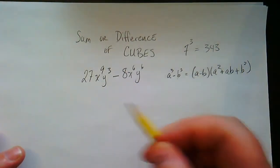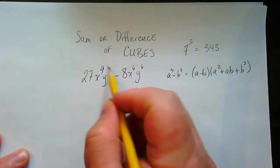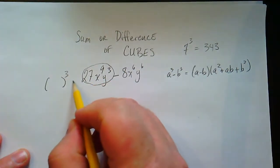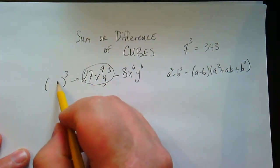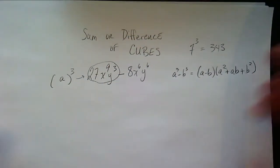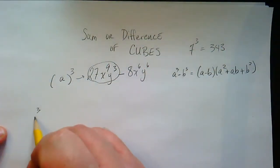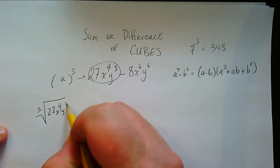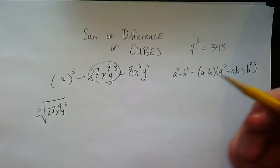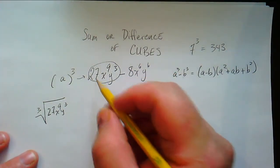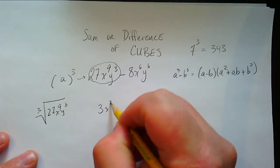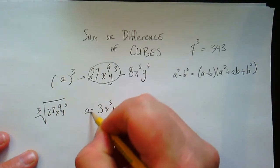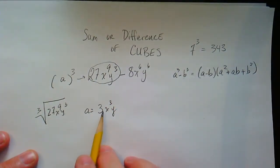So what cubed gives you this whole term? To figure out a, you have to figure out what cubed equals the first term, and that's what a is — you can think of it as taking the cube root of the whole thing. For 27x to the ninth y cubed, you can say: that's 3, that's x to the third (because if you cube x to the third you get x to the ninth), and that's y. So a equals 3x cubed y. You could do it either way and you get the same answer — if you know your cubes, you're good to go.